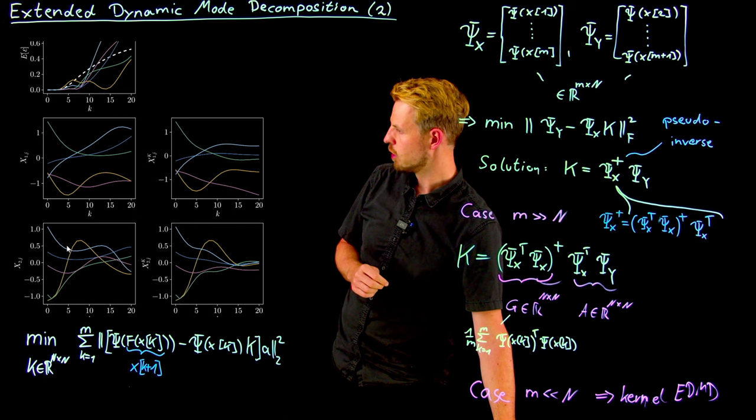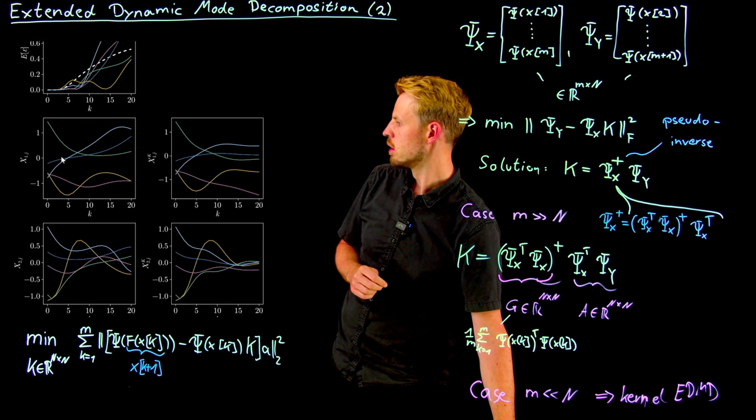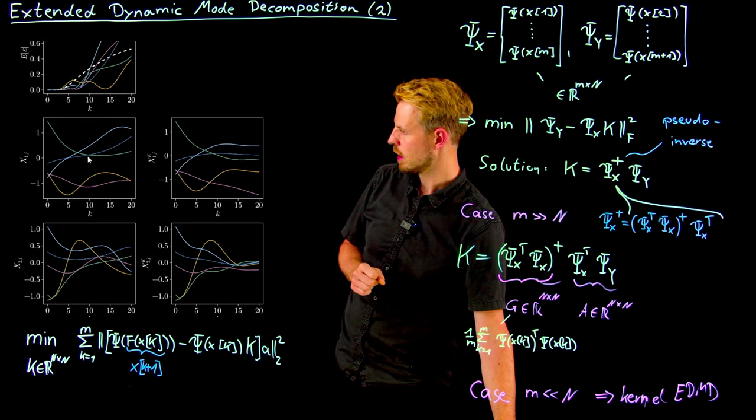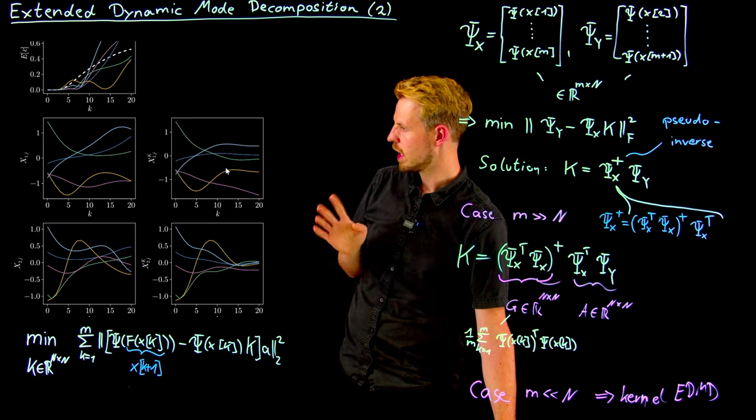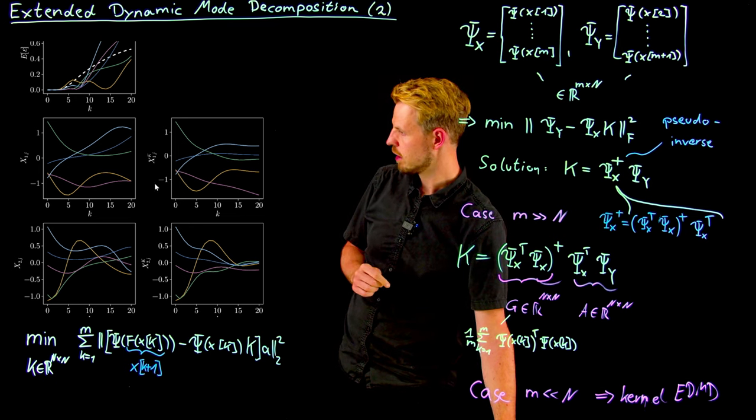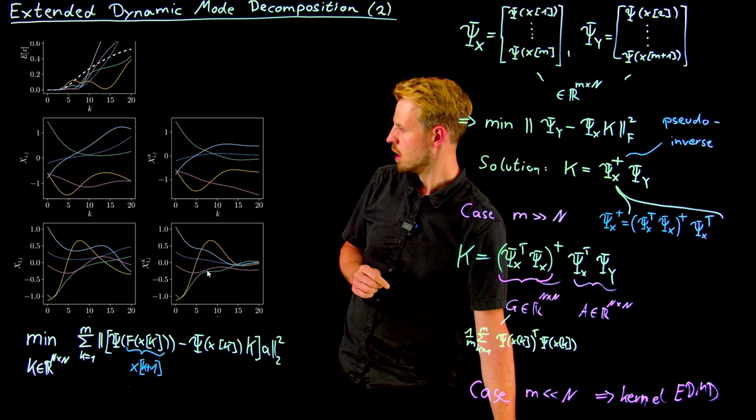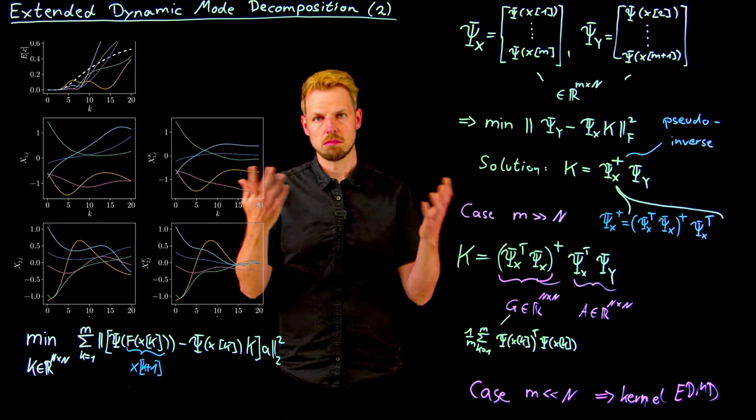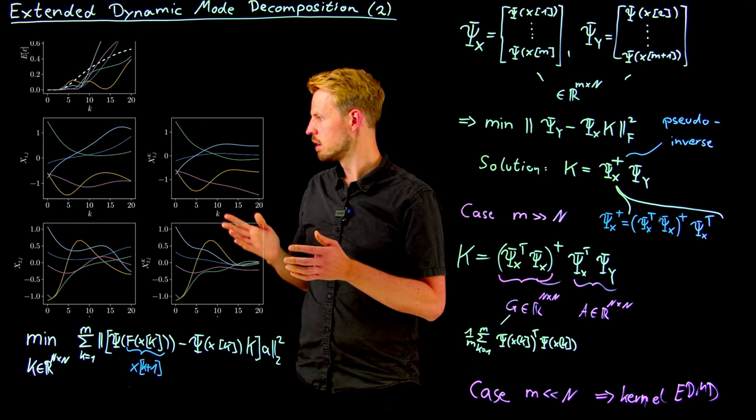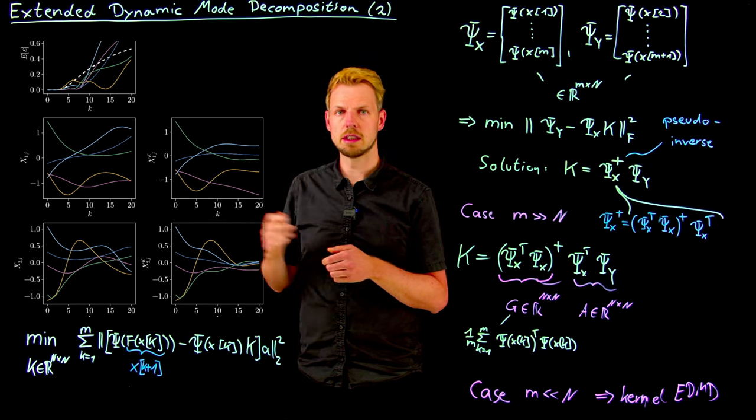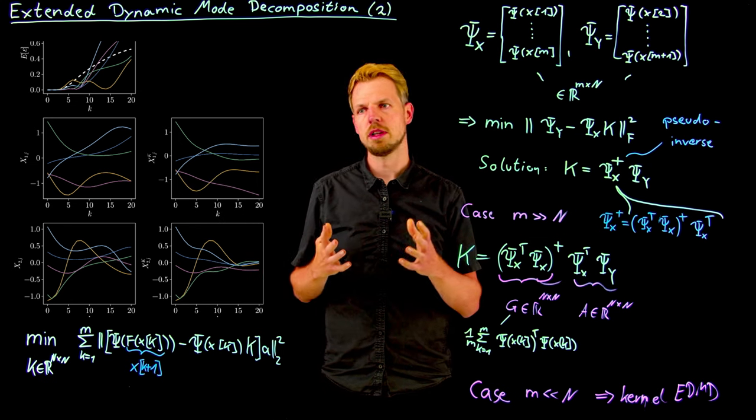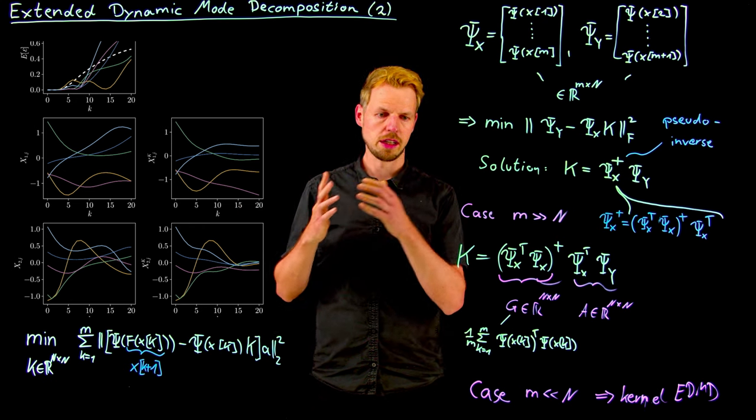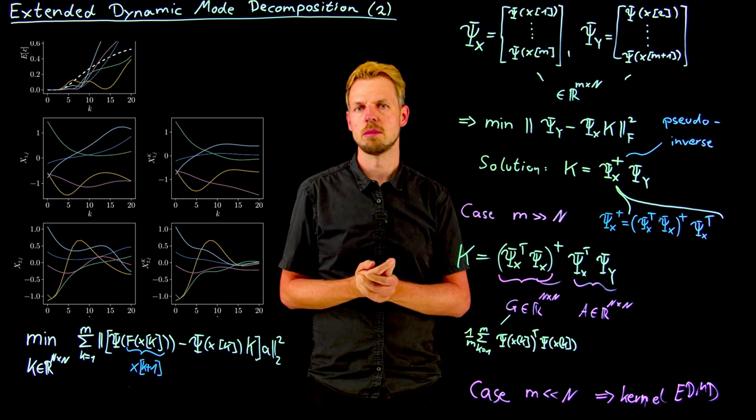And here are two more plots which show you the first component, the true system and the predicted system. And so you see clearly we do not predict perfectly well, but OK-ish, let's say, you see a yellow and yellow. And so this is the second component. So we clearly see there's an inaccuracy, but it's also capable of predicting a couple of time steps ahead.